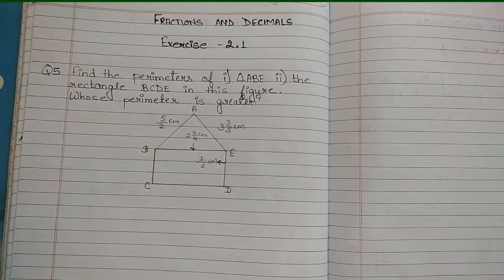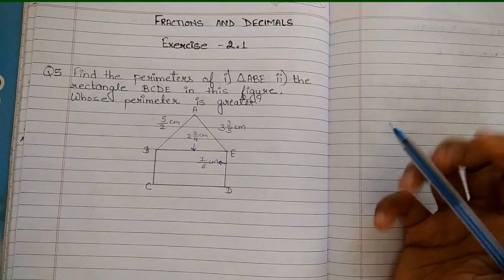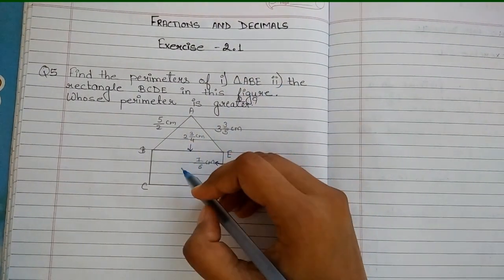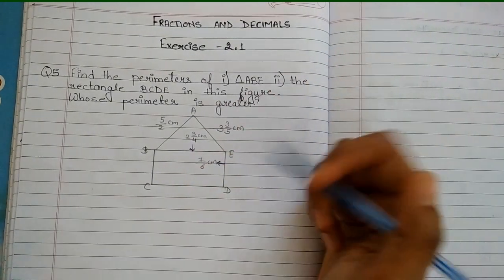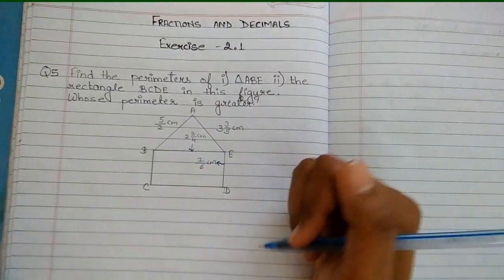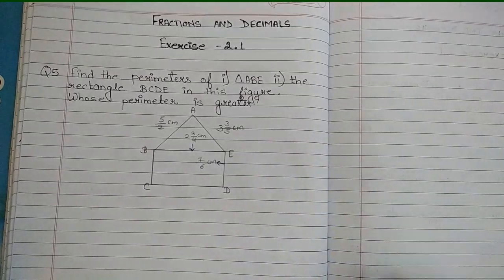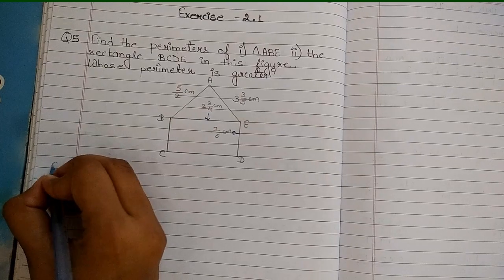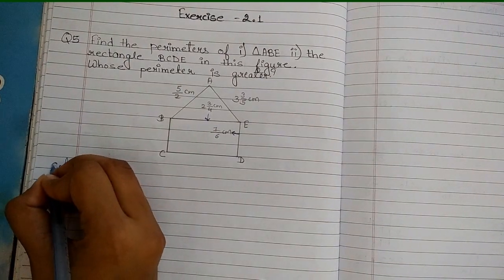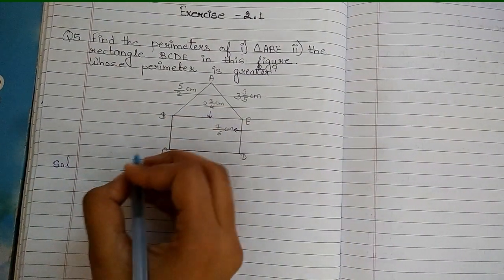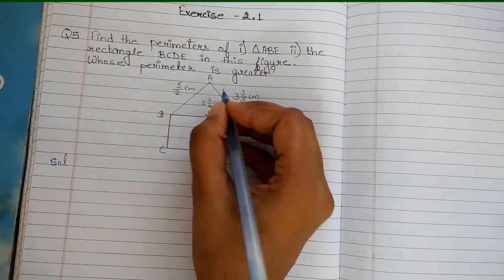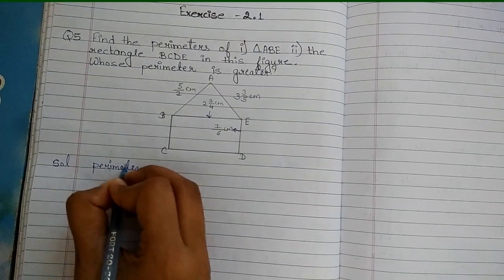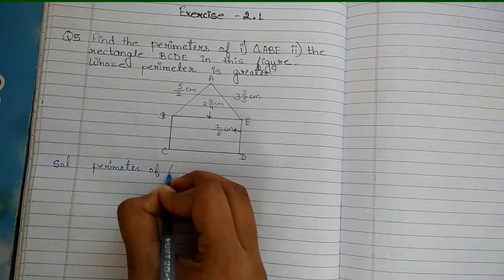So here are 3 questions that we have to solve. First, we have to find the triangle perimeter. Second, we solve the rectangle perimeter. Then we have to find out which perimeter is greater. Okay, so let's start. First, we solve the triangle. Perimeter of triangle.